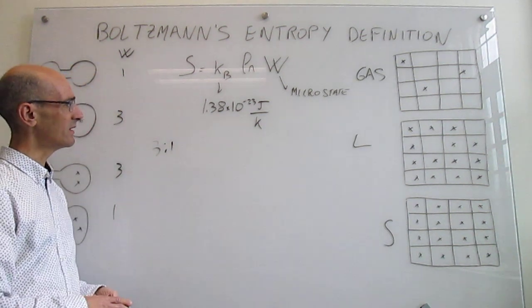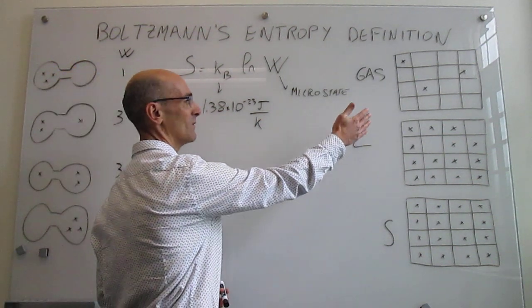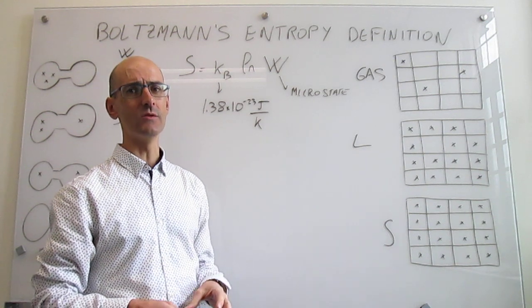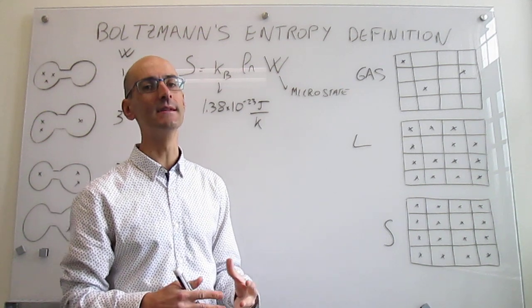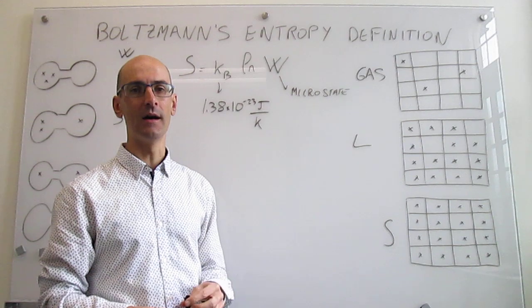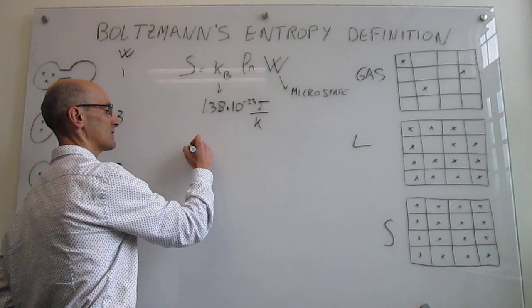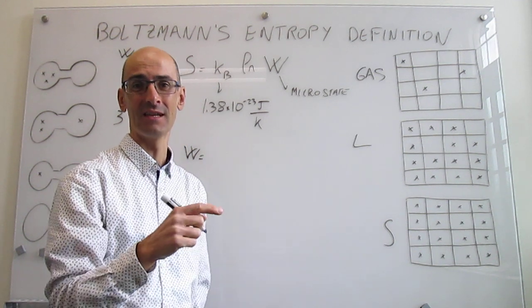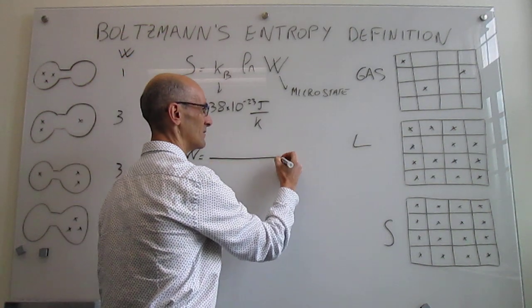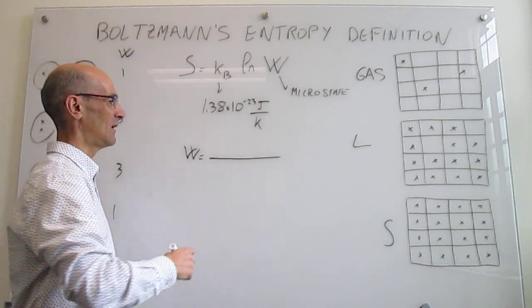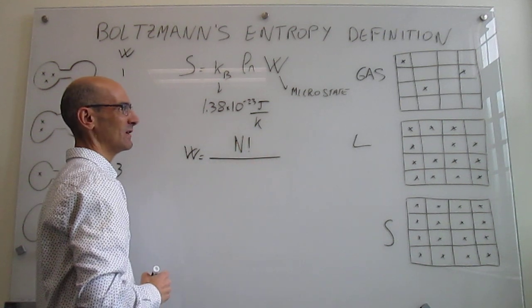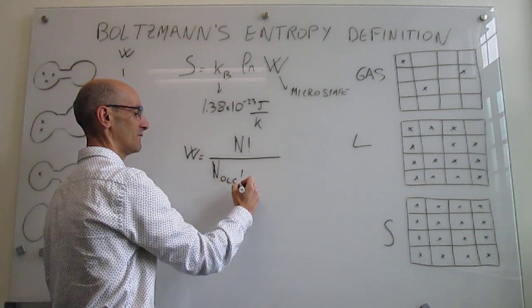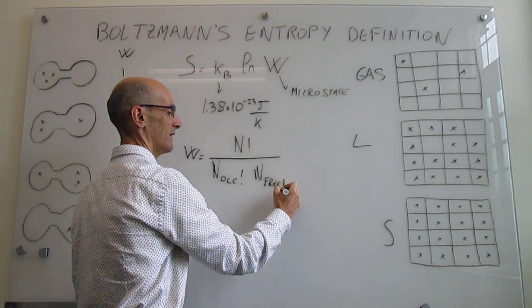To calculate the number of microstates for each arrangement, we divide the 2D lattice into 16 boxes — this is entirely arbitrary and a crude model, but useful to illustrate positional entropy. Using statistics, the number of arrangements is: N factorial divided by the number of occupied sites factorial times the number of free sites factorial. For the gas: 16! divided by 3! times 13! — that equals 560 microstates.